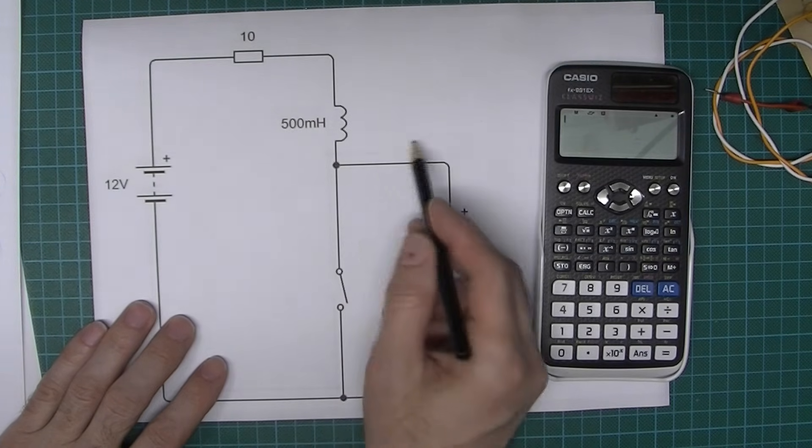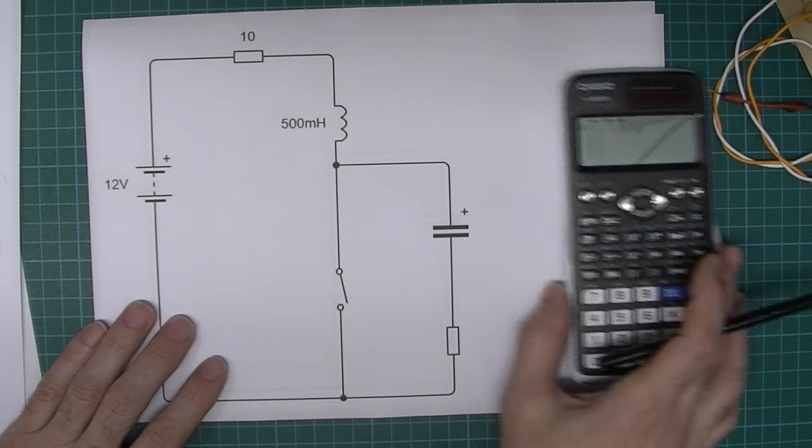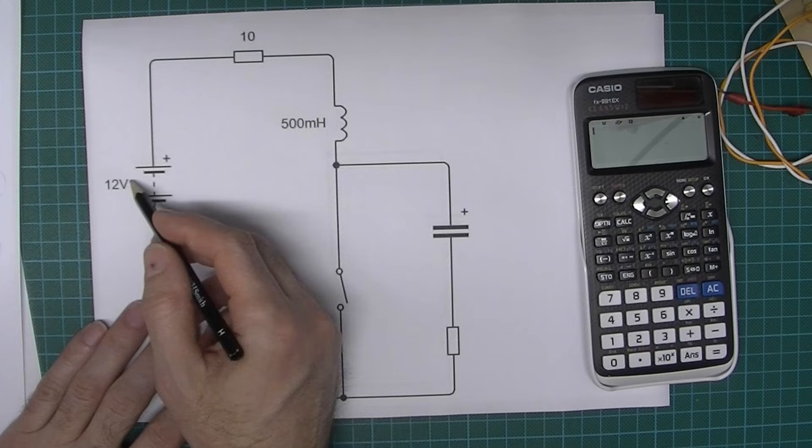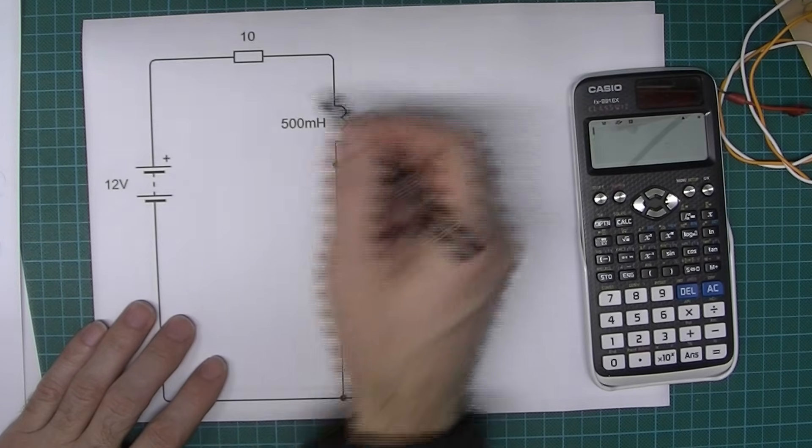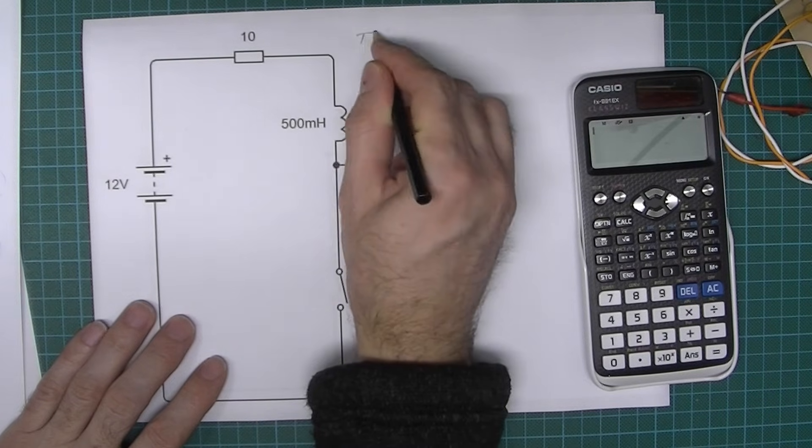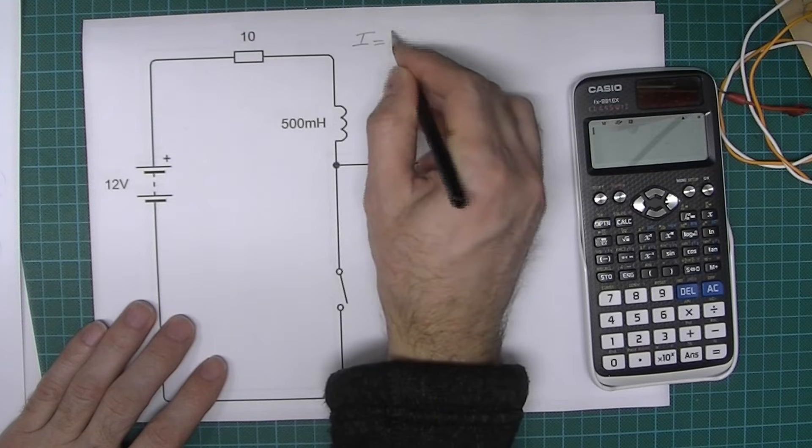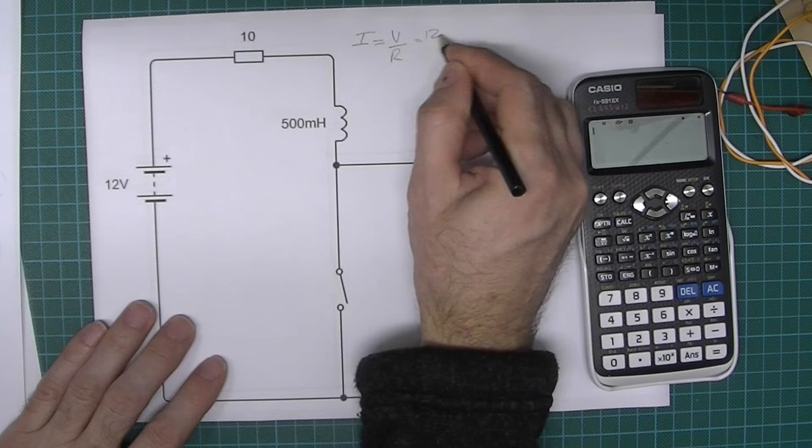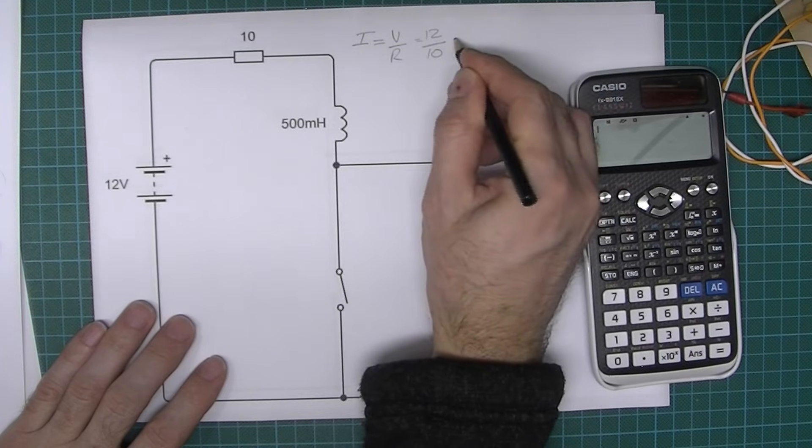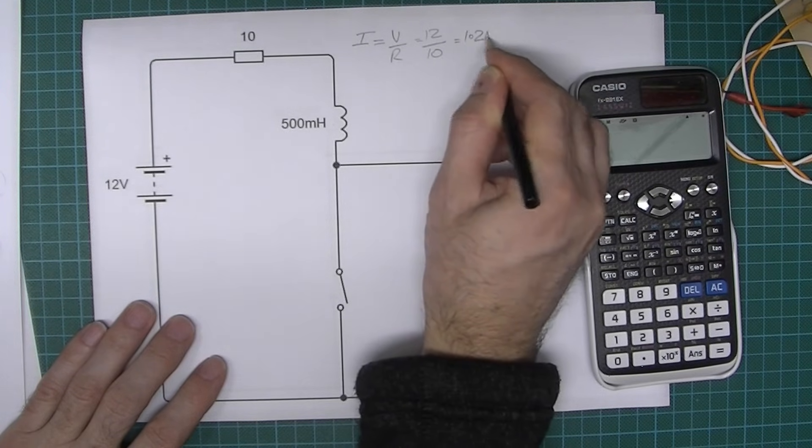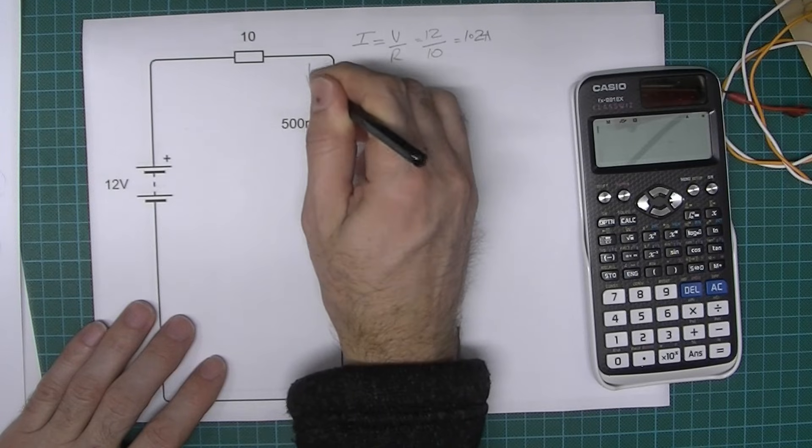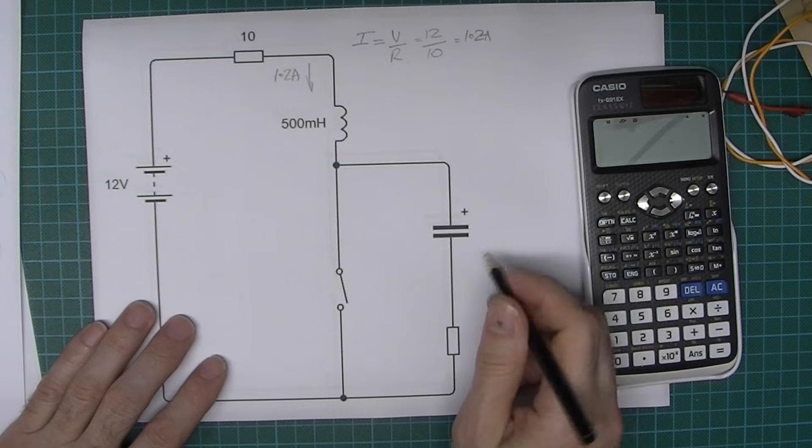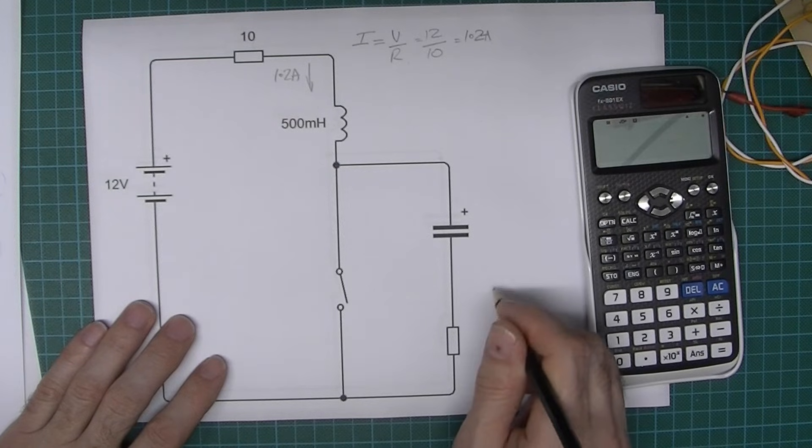That current is going to be quite important because later on when we open the switch, that same current is going to flow here. I've deliberately chosen quite simple values, so we've got 12 volts and 10 ohms, so the current is going to be V over R, which is 12 divided by 10, which is 1.2 amps. We're going to have 1.2 amps flowing down there, and later on also 1.2 amps going here as well, albeit momentarily.